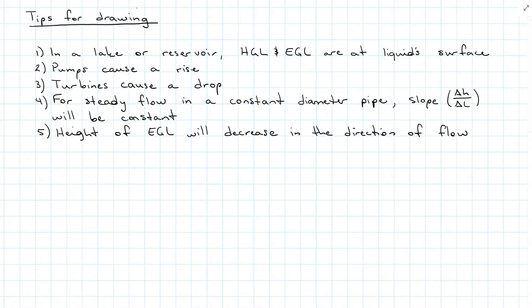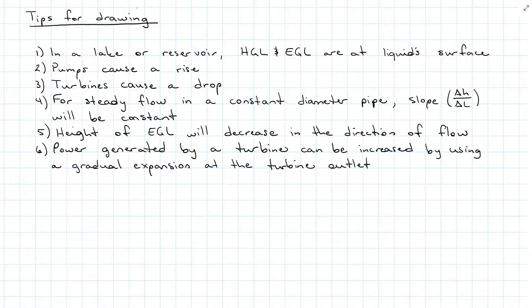And that slope, the height of the energy grade line, will decrease in the direction of flow, unless of course you have a pump, and then we'll have a jump. The power generated by a turbine can be increased by using a gradual expansion at the turbine outlet.